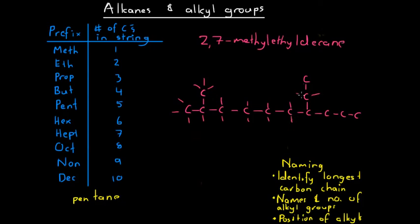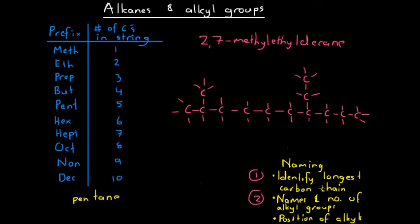That is how we deduce structures from their names — using the naming process in reverse. To summarize our three-step process: first, identify the longest carbon chain; second, identify the types and number of alkyl groups present; third, determine the position of those alkyl groups. If there's any ambiguity about where the methyl or ethyl groups sit on the molecule, we number the carbon they belong to. That is an introduction to alkanes and alkyl groups.